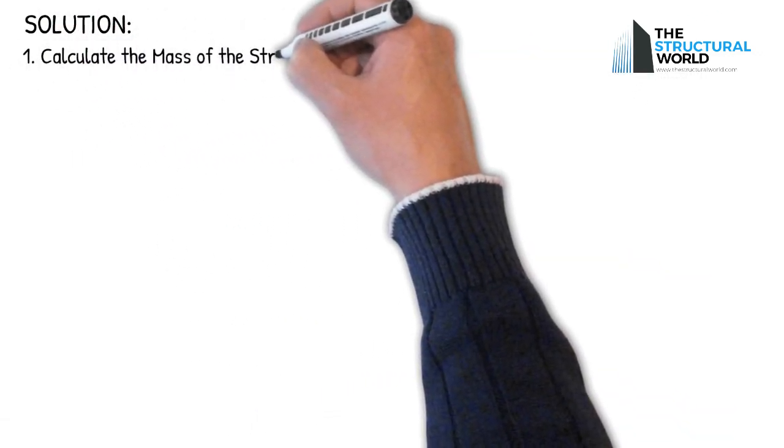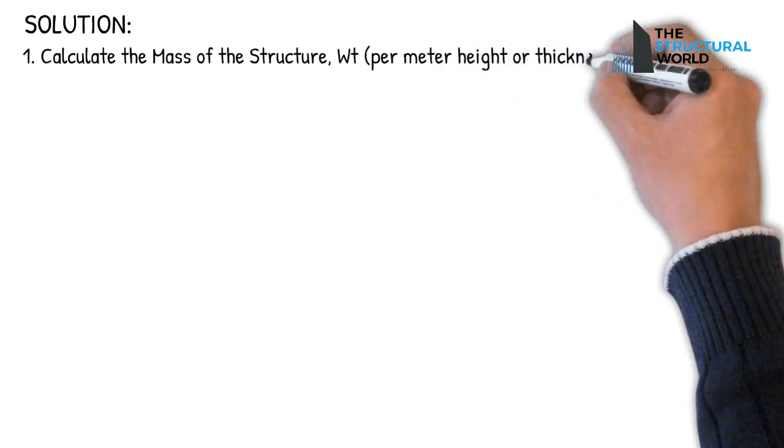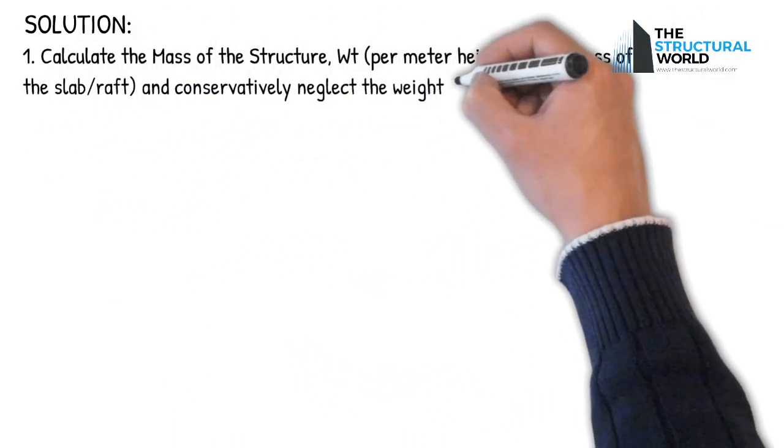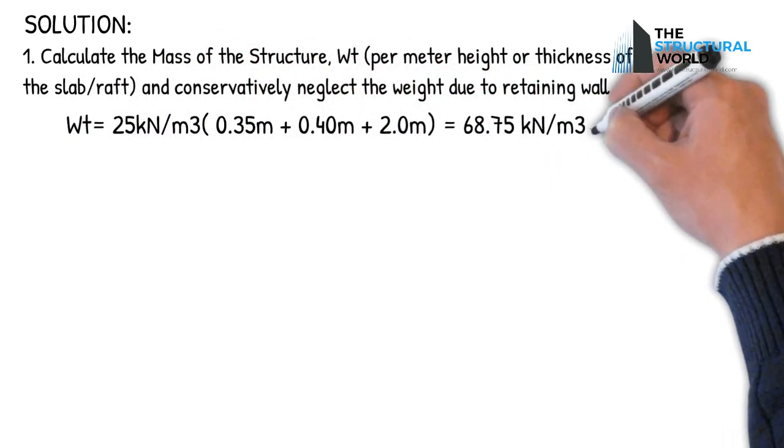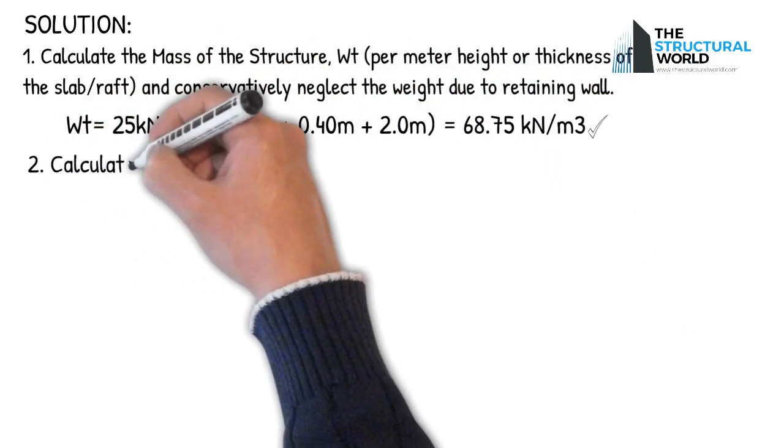Solution 1: Calculate the mass of the structure per meter height or thickness of the slab or raft, and conservatively neglect the weight due to retaining wall.